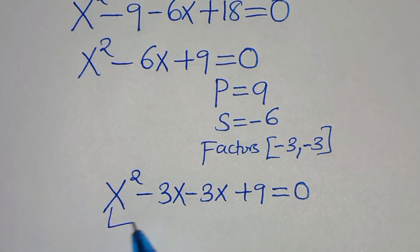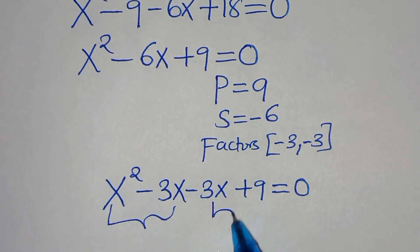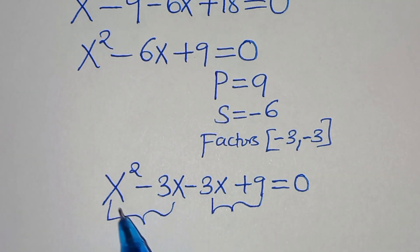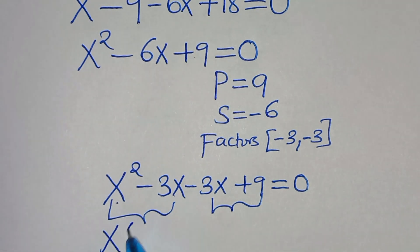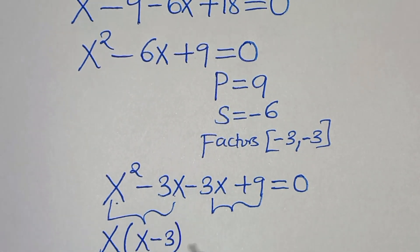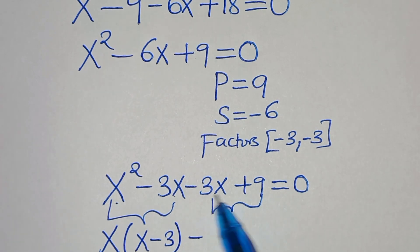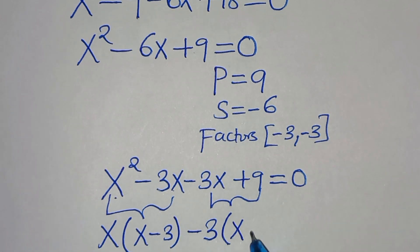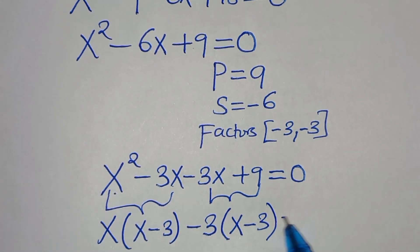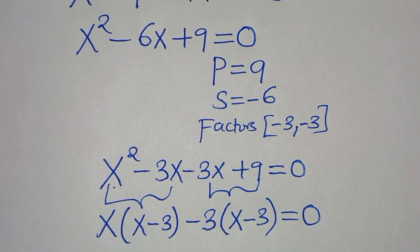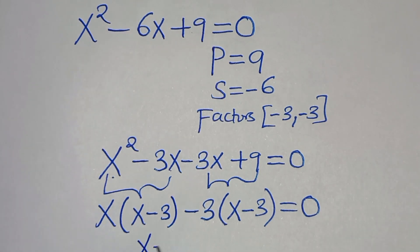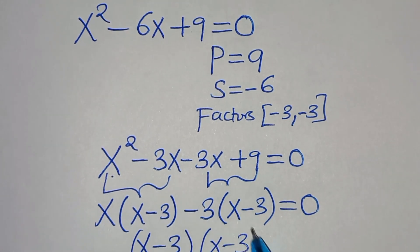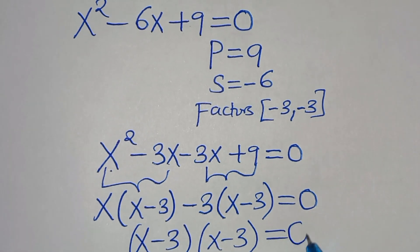Now we group into two parts. From the first part, x is common, giving x times (x minus 3). In the second part, 3 is common, so we factor out 3, giving minus 3 times (x minus 3). This equals 0, so we have (x minus 3)(x minus 3) equals 0.